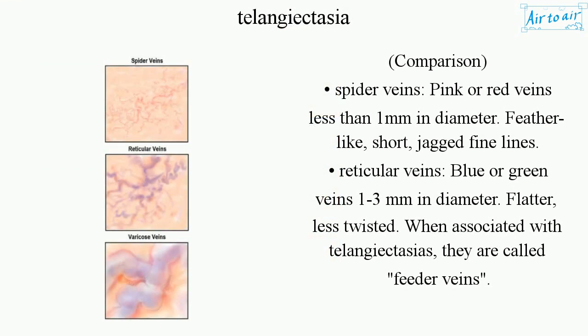Comparison — Spider veins: pink or red veins, less than 1 mm in diameter, feather-like, short, jagged fine lines. Reticular veins: blue or green veins, 1–3 mm in diameter, flatter, less twisted; when associated with telangiectasias, they are called feeder veins.